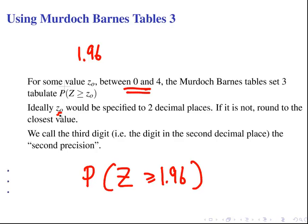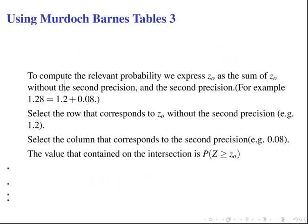Ideally your number z0 should be specified to two decimal places, if not rounded to the closest value. What we have to do is split our number up into two parts. To compute the relevant probabilities we express z0 as the sum of z0 without the second precision and the second precision.